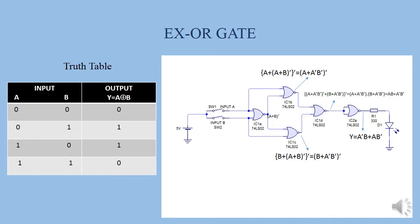Here we use 5 NOR chips. Chip number is 7402. Four NOR chips are connected here and the 5th one is connected here. Two input lines are connected: input A and input B. Input A is connected with switch 1, input B is connected with switch 2. Both switches are connected with the positive potential of the 5 volt DC power supply, and the negative potential is connected with the ground terminal.